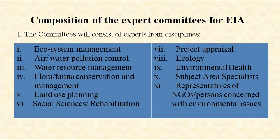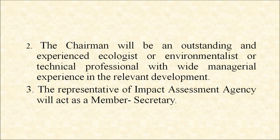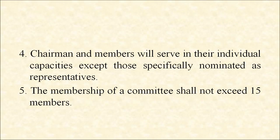Now, the composition of the expert committees for EIA. The committee will consist of experts from different disciplines such as ecosystem management, air and water pollution control, water resource management, flora and fauna conservation and management, land use planning, social sciences or rehabilitation, project appraisal, ecology, environmental health, subject area specialists, and representatives of NGOs concerned with environmental issues. The chairman will be an outstanding and experienced ecologist or environmentalist or technical professional with wide managerial experience in the relevant development. The representative of the impact assessment agency will act as member secretary. Chairman and members will serve in their individual capacity except those specially nominated as representatives. The membership of the committee shall not exceed 15 members.